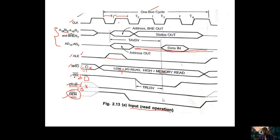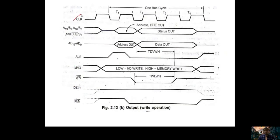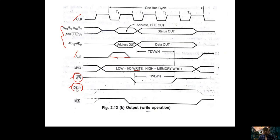Now let us see the write operation — where changes are required from the read timing diagram. The clock, multiplexed address lines, address and data lines are the same. M/IO̅ is one for memory write, zero for I/O write. The key change is that instead of RD̅, we now activate WR̅. WR̅ should be low from T2 to T4 and high before T2. The other change is DT/R̅: for write operation the processor transmits data, so DT/R̅ must be high during T2 to T4.